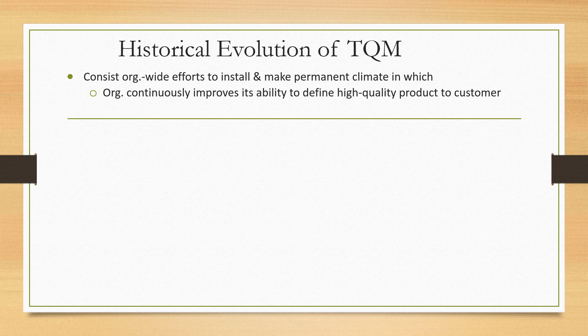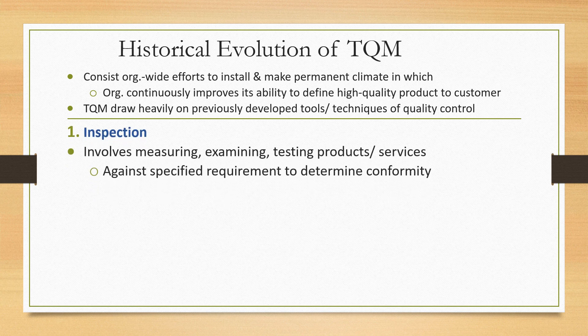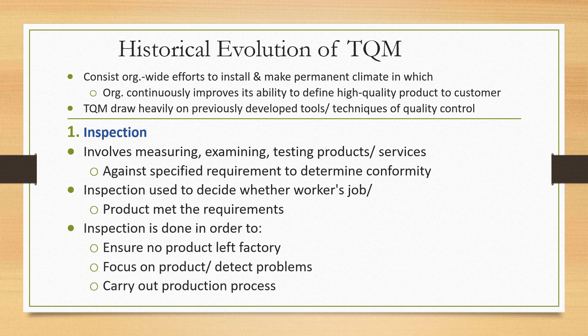Now, talking about the historical evolution of Total Quality Management. TQM draws heavily on previously developed tools and techniques of quality control. First, there is inspection, which involves measuring, examining, and testing products and services against specified requirements to determine conformity. Inspection is used to decide whether the worker's job or produced product meets requirements, and is done to ensure no defective product leaves the factory.